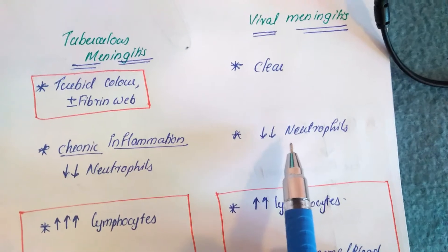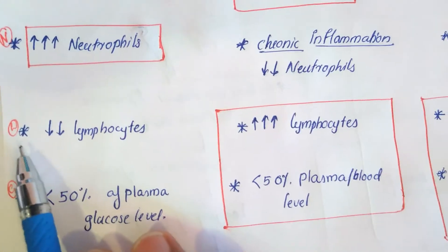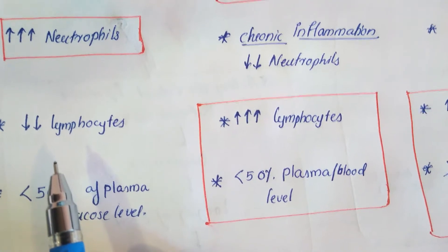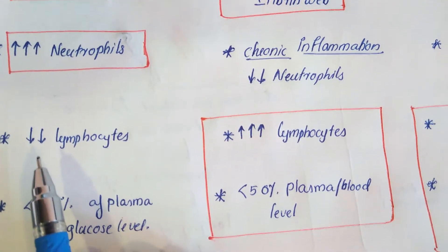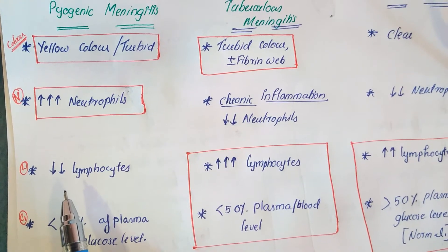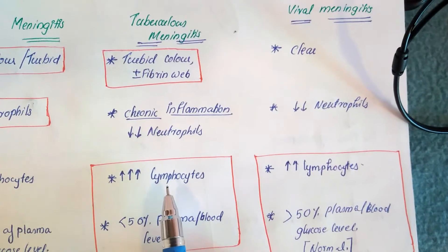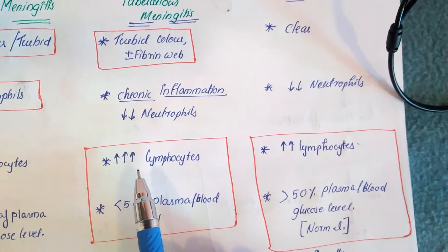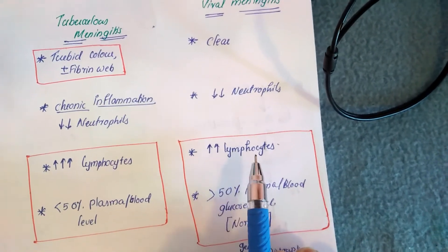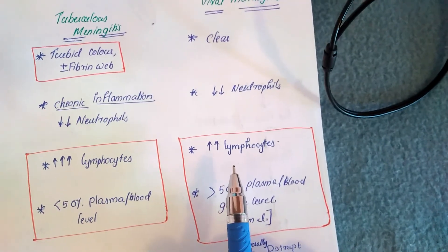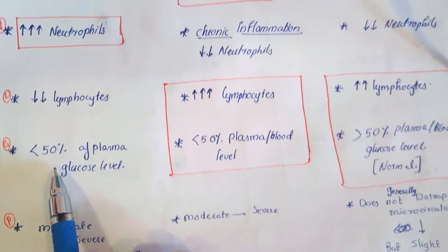Viral meningitis also has a low level of neutrophils, similar to tuberculosis meningitis. The normal lymphocyte count in CSF is approximately five cells per cubic millimeter. Because pyogenic meningitis is an acute inflammation, there is a low level of lymphocytes. Tuberculosis meningitis is a chronic inflammation, so there is a much higher lymphocyte count in the CSF. Viral meningitis also has high lymphocytes, but not as high as in tuberculosis meningitis.